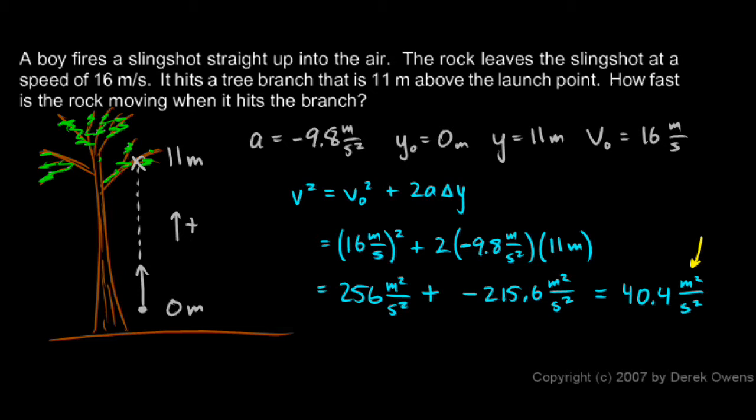Meters squared per second squared, you should look at that and think, that's not what I'm looking for. I'm looking for velocity, which is meters per second. And you should realize, ah, this makes sense because what I just found was v squared right there. To find v, I need to take the square root of that.